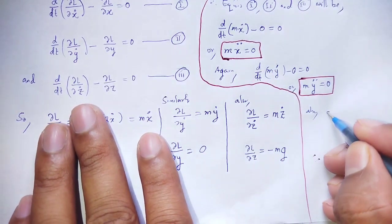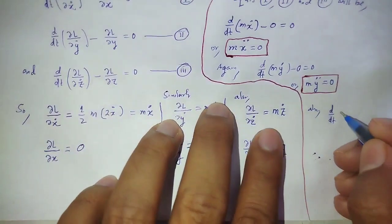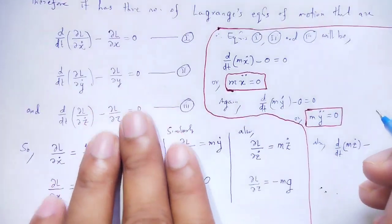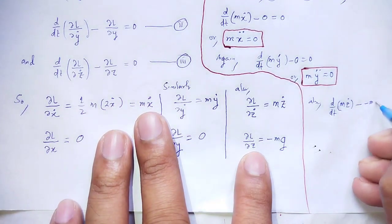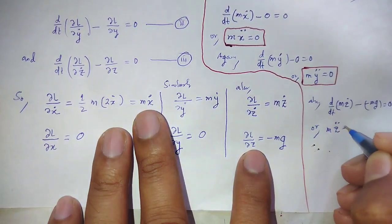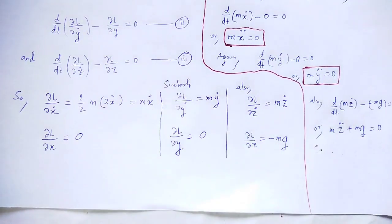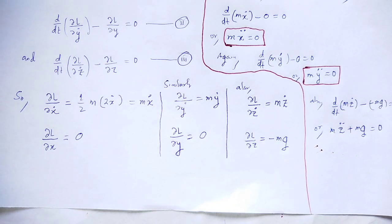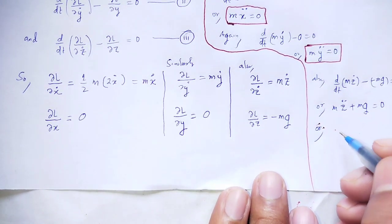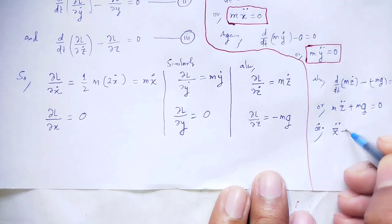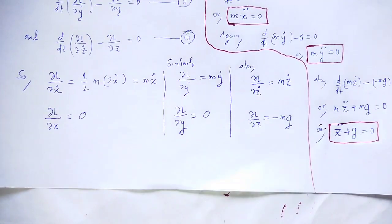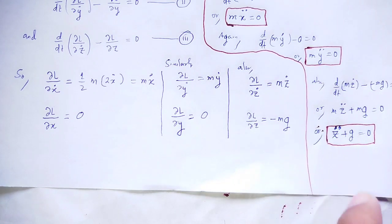For the third equation: d/dt(∂L/∂ż) = mż, and ∂L/∂z = −mg. So mz̈ − (−mg) = 0, which gives mz̈ + mg = 0. Taking m common, we get z̈ + g = 0.